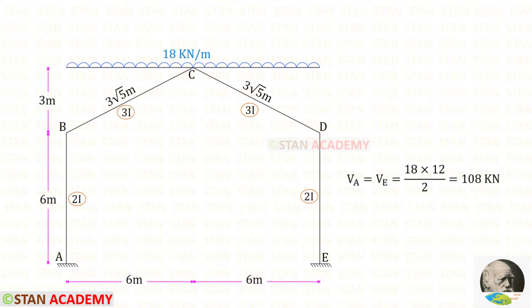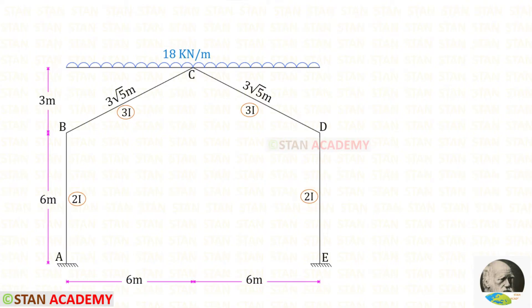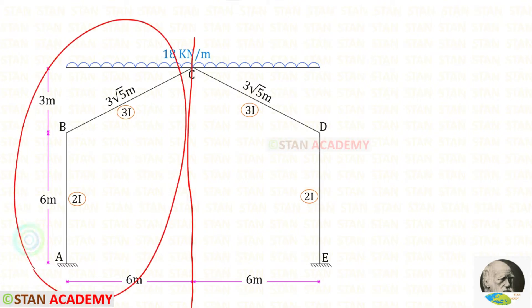We know that this frame is symmetrical with respect to dimensions and loading. So we can easily find the vertical reactions at points A and E. To find VA and VE, we multiply the load with the distance and divide by 2, giving us 108 kilonewton. In the case of sway-type frames in the moment distribution method, we have to do the analysis two times: first the non-sway analysis and then the sway analysis. Since the frame is symmetrical, we can split it from the center and take only the left half for analysis.